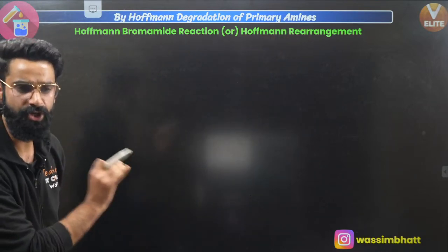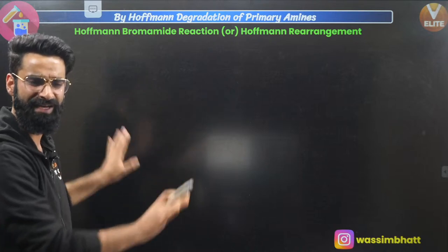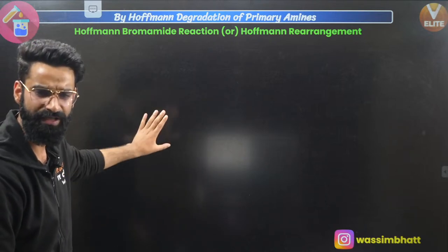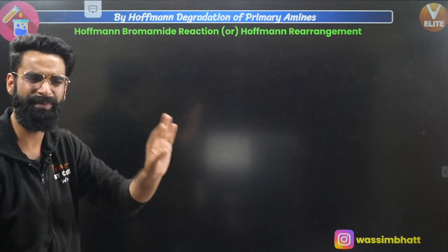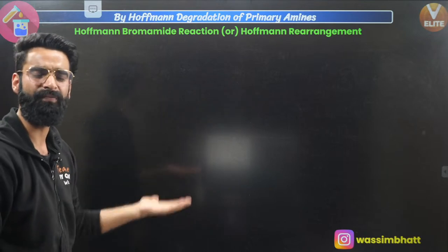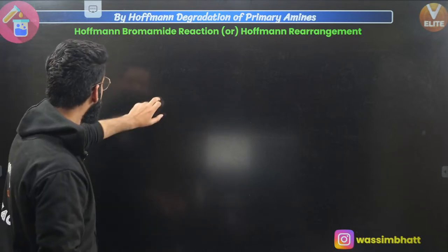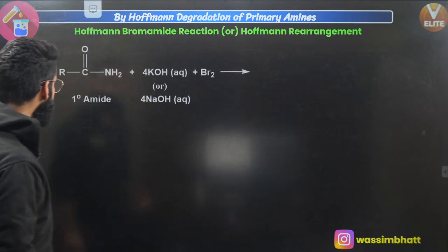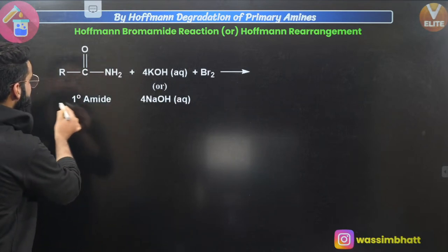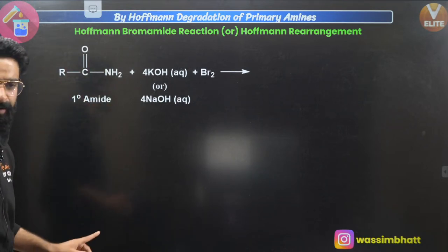An important feature of Hoffmann rearrangement: in the earlier reduction of amides with LiAlH4, we removed C=O and added two hydrogens to keep the same carbon count. But in Hoffmann rearrangement, we remove the C=O and join R directly to N — so the product has one carbon less than the starting material. This is a key distinguishing point. The intermediate formed in Hoffmann rearrangement is alkyl isocyanate, which is sometimes asked in exams.